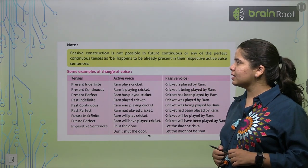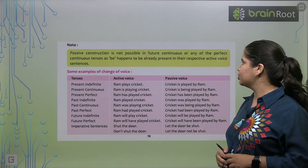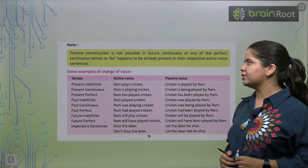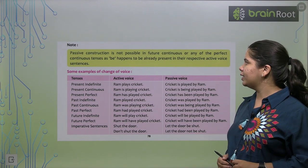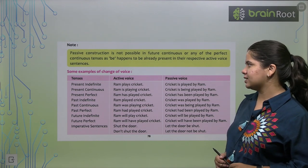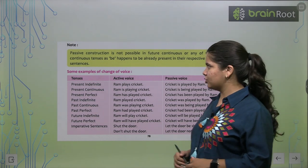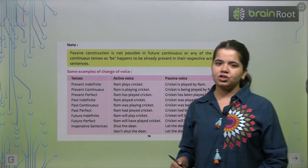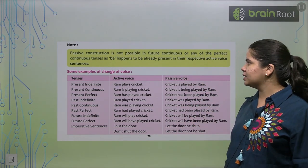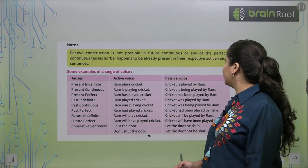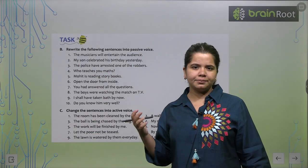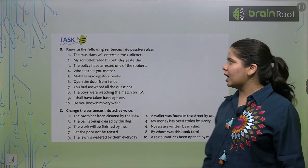Now we have a note. Passive construction is not possible in future continuous or in any perfect continuous tense, as be happens and to be are already present in their respective active voice sentences. So you have to keep in mind that passive construction can never be in future continuous or perfect future continuous tense. So this is also something which you have to keep in mind.